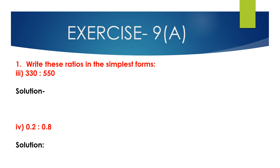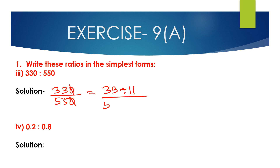Now question number 3rd bit: 330 is to 550. We can write 330 is to 550 as 330 divided by 550. Cancelling the trailing zeros, we get 33 divided by 55. Between 33 and 55, 11 is the common factor. Dividing the antecedent 33 by 11 and the consequent 55 by 11, we get 33 divided by 11 is 3 and 55 divided by 11 is 5. So 3:5 is the simplest form of the ratio 330 is to 550.